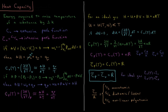We now define the constant pressure heat capacity Cp, which is the partial derivative of enthalpy with respect to temperature at constant pressure. Note that for Cv at constant volume we use internal energy, whereas for Cp at constant pressure we use enthalpy.